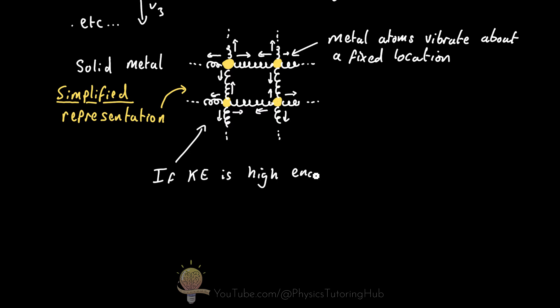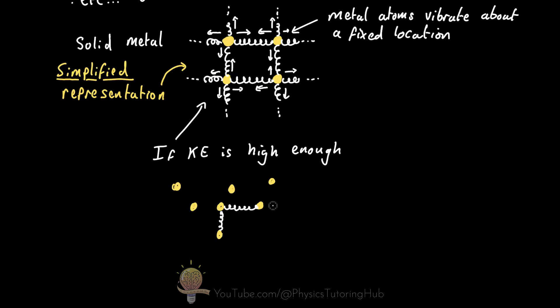And if the velocity of the atoms are very high, the atoms can break free from these attractive springs and flow around. This is when the metal turns into a liquid.